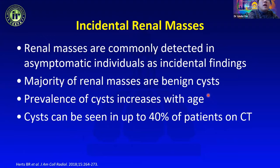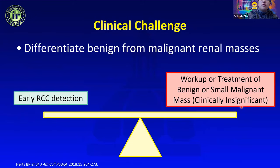As Dr. Fishman mentioned, renal masses are commonly detected in asymptomatic individuals as incidental findings, and the majority of these renal masses are benign cysts. The prevalence increases with age such that they can be seen in up to 40 percent of patients on CT. The clinical challenge is really trying to balance the benefits of early RCC detection versus workup or treatment of benign or small malignant masses that really aren't necessary.